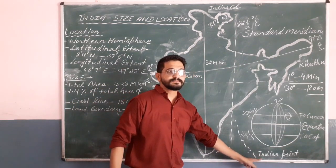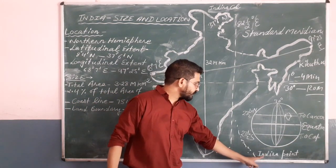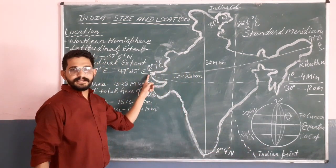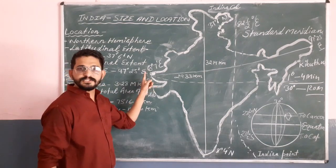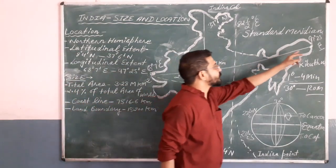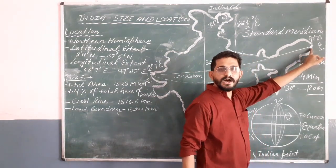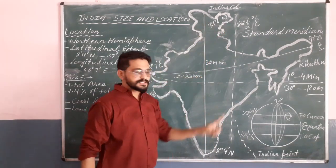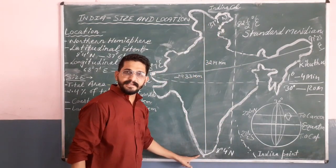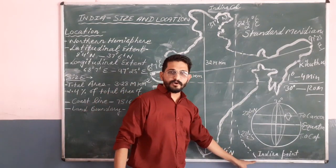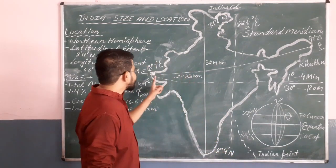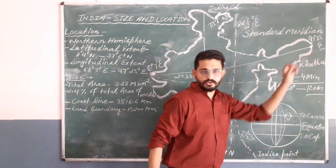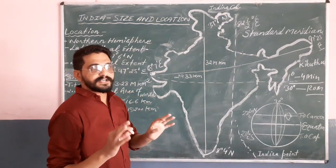To summarize: the southernmost point of India Union including Union Territories is Indira Point. The westernmost point of India is Guhar Moti, which is in Gujarat. The easternmost point of India is Kibithu, which is in Arunachal Pradesh. So these are the four farthest points of India.